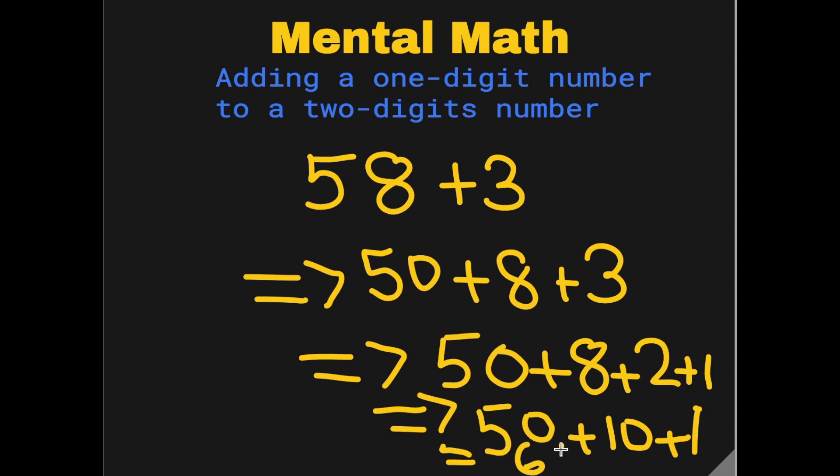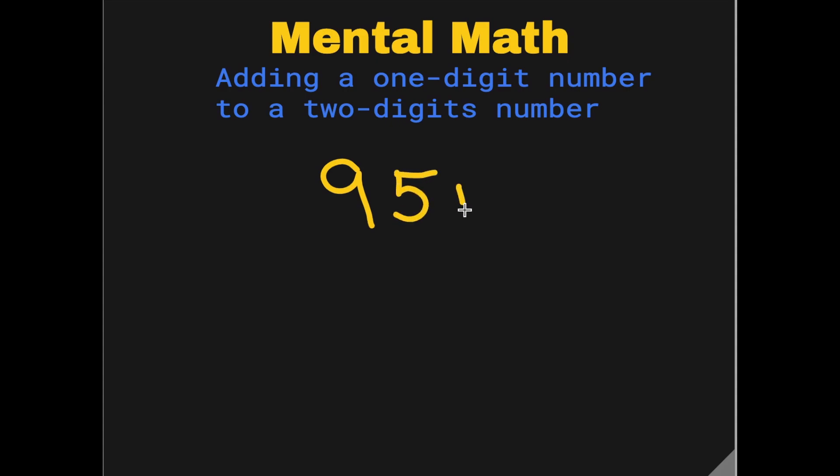Let's do another one: 95 plus 7. So we know that you can separate the 90 and we can handle the 5 plus 7.